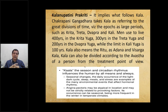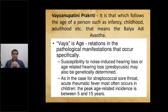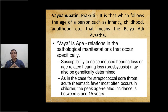Kala can also be divided according to the Avastha of the person from the treatment point of view. Vaya means age of the person — infancy, childhood, adulthood. Susceptibility to noise-induced hearing loss or age-related hearing loss may also be genetically determined. In the case of Streptococcal sore throat, acute rheumatic fever most often occurs in children. Thus we have to consider the Avastha about any disease.